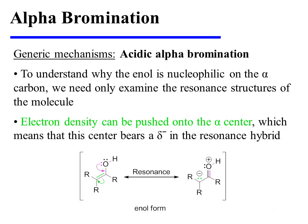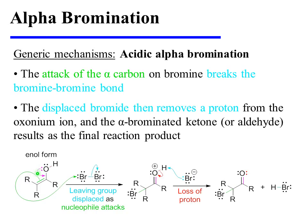To understand why the enol is nucleophilic on the alpha carbon, we need only examine the resonance structures of the molecule. Electron density can be pushed onto the alpha center, which means that this center bears a partial minus charge in the resonance hybrid. The attack of the alpha carbon on bromine will result in the cleavage of the bromine-bromine bond. The bromide that was displaced then removes a proton from the oxonium ion, and the alpha-brominated ketone or aldehyde results as the final reaction product.